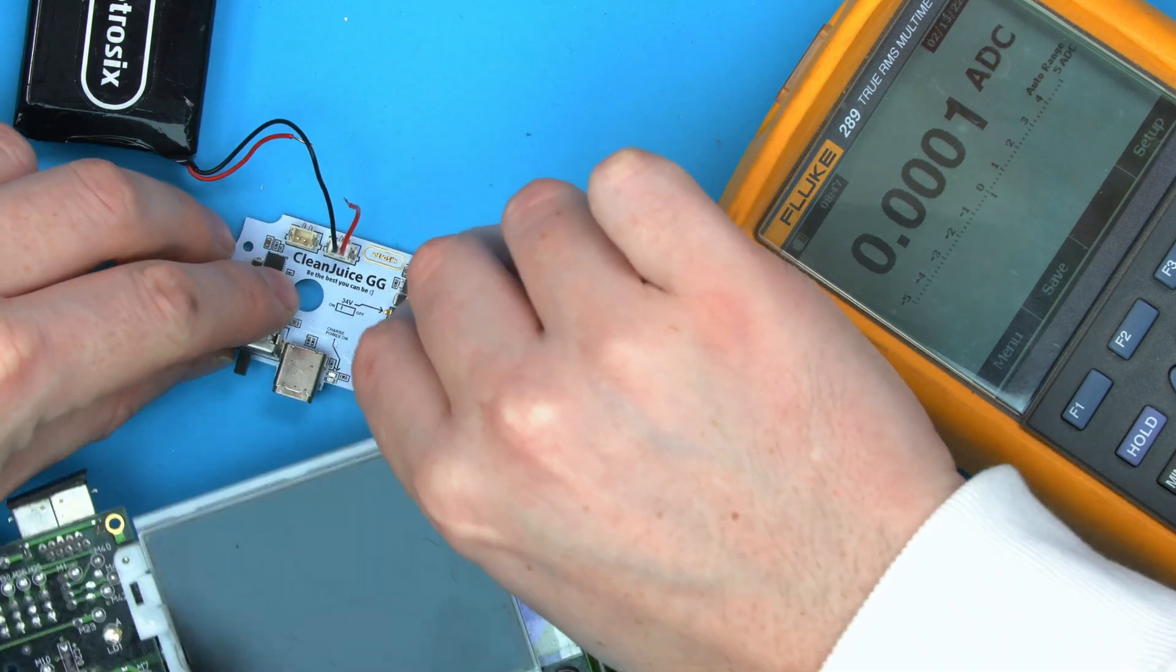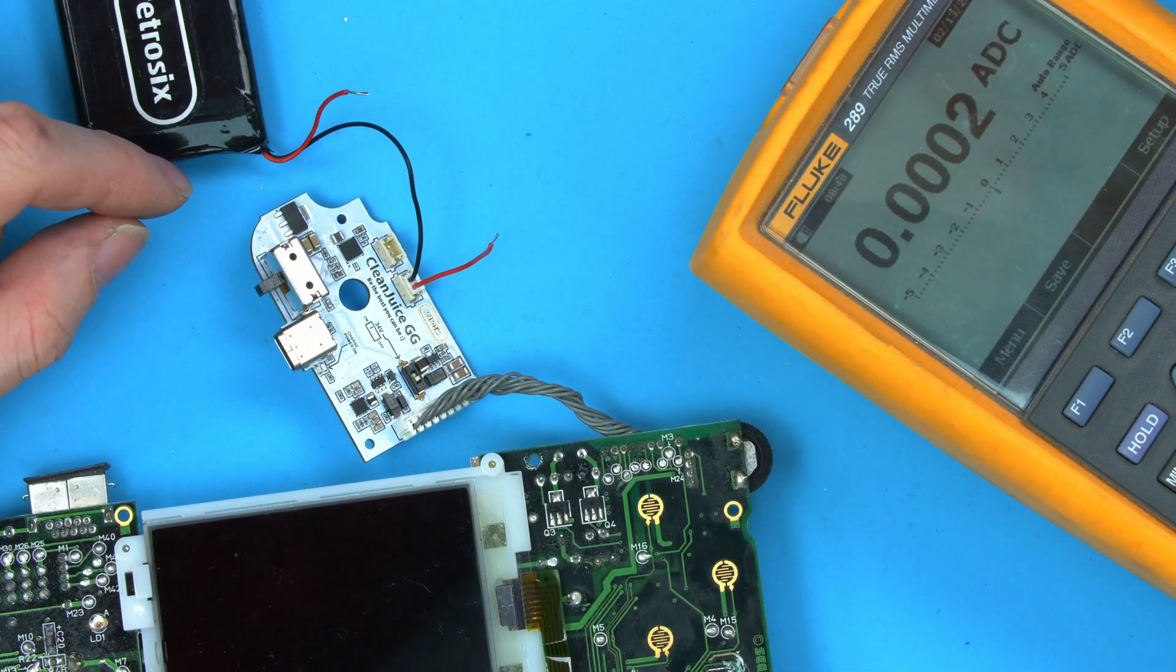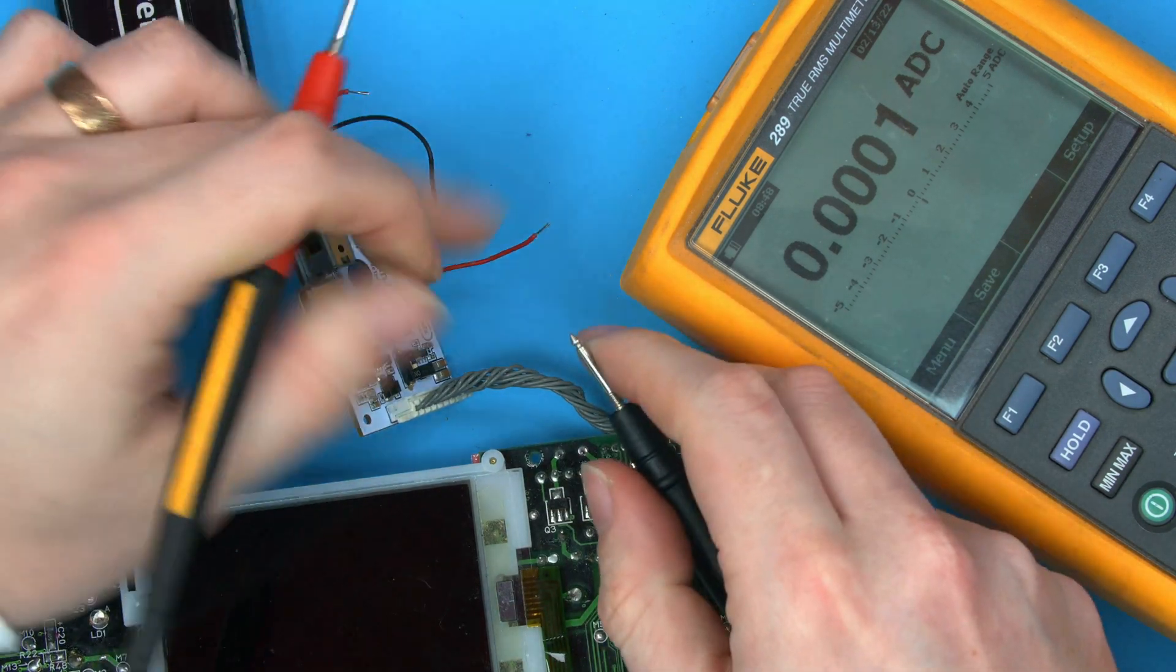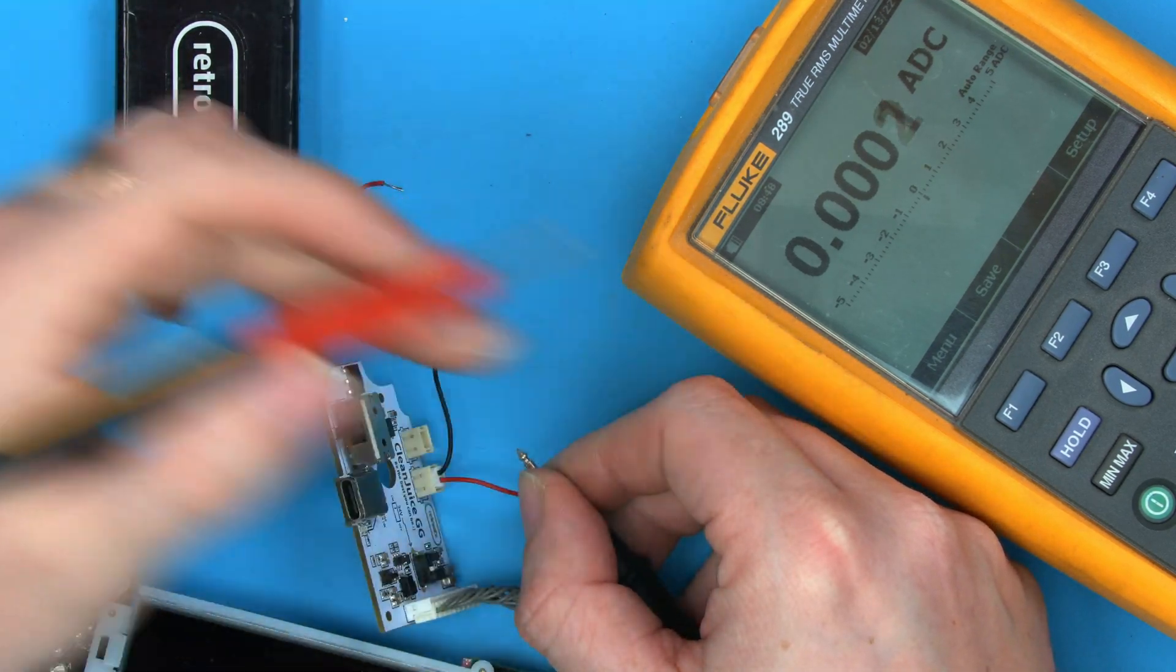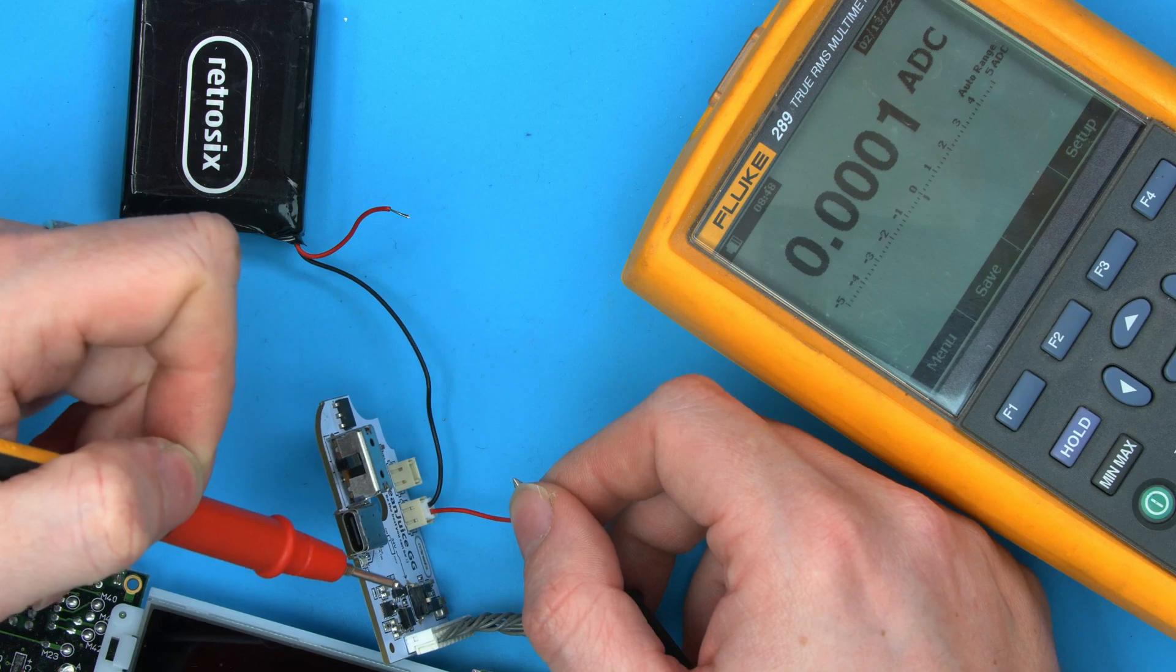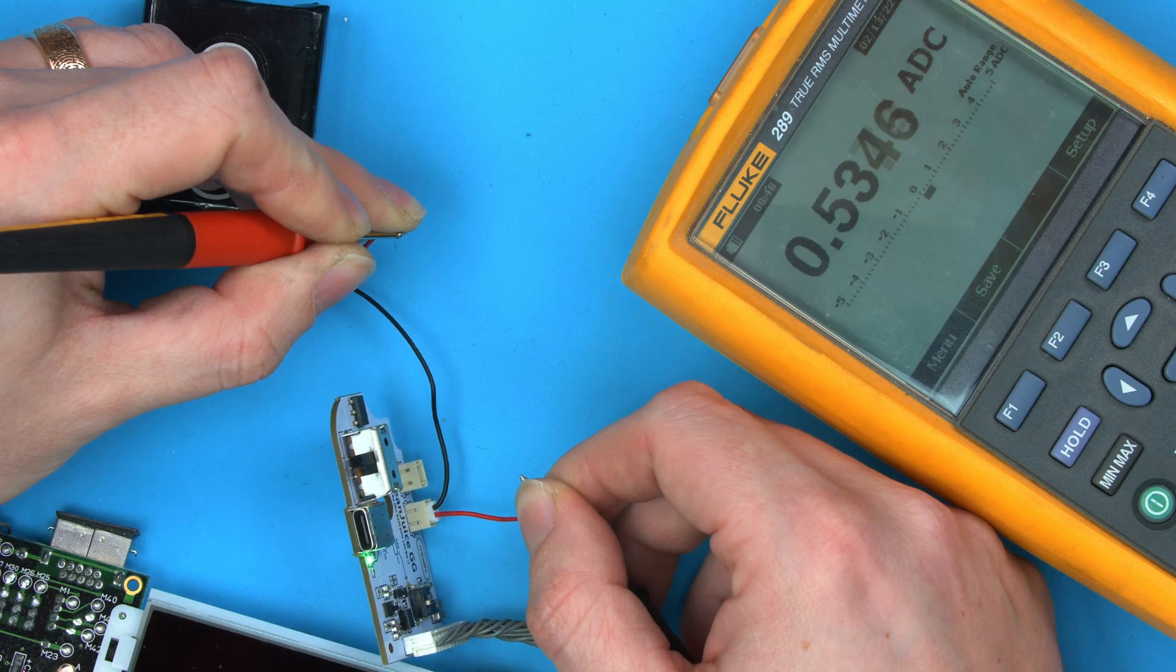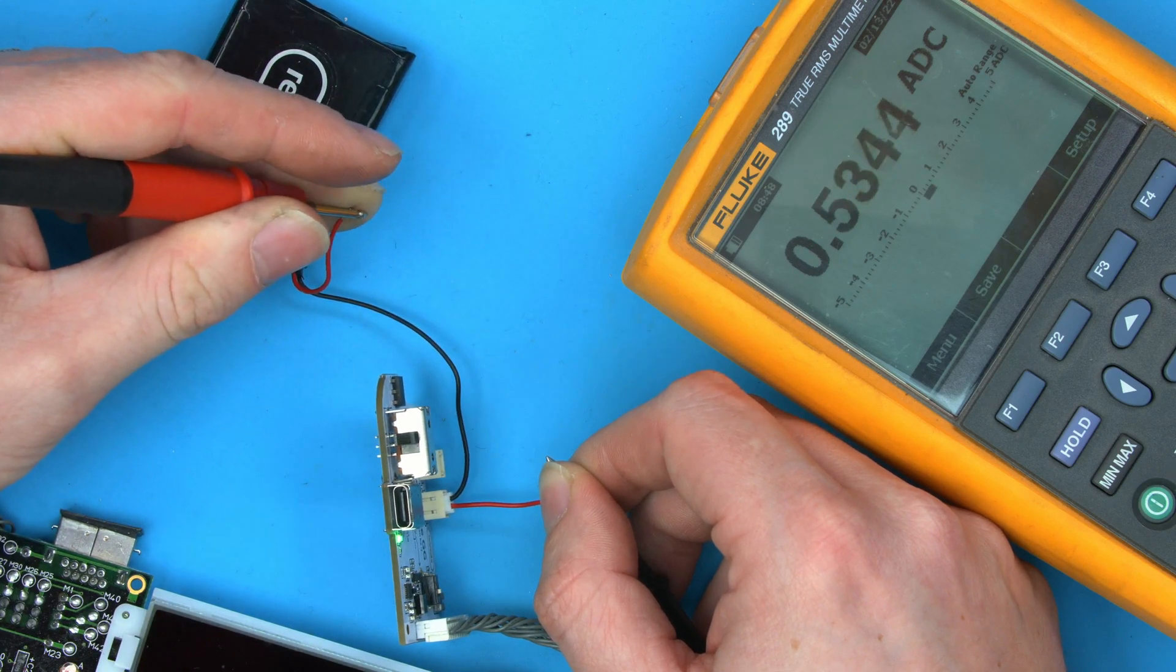For that, all we have to do is connect the Clean Juice up to the system. We'll leave the switch on so I can do this one-handed. I've made sure I'm in the 10 amp fuse mode. All we have to do is connect our probes. If you connect these back to front, by the way, you'll just get a negative amp reading. It won't affect anything. You'll just see negative. Let's connect this up. You can see we are drawing 0.53 amps to power this Game Gear. If we turn it off, we drop back down to 0.0003. Turn it back on, and there's half an amp.